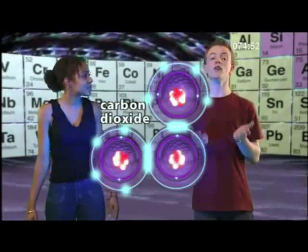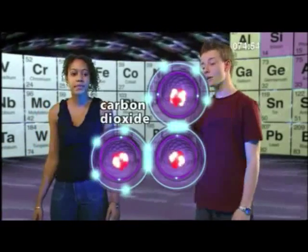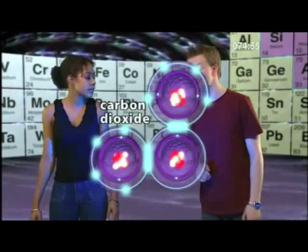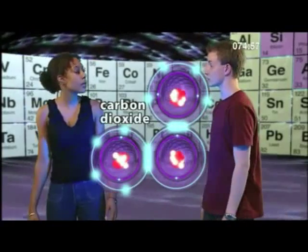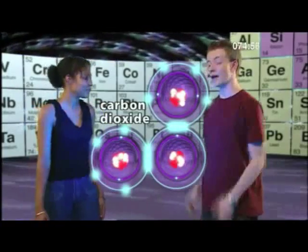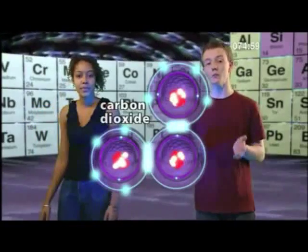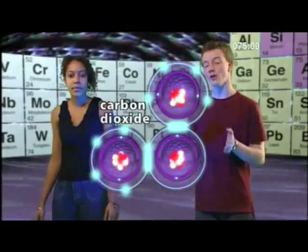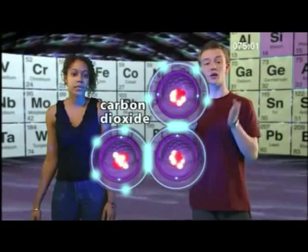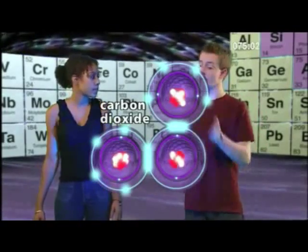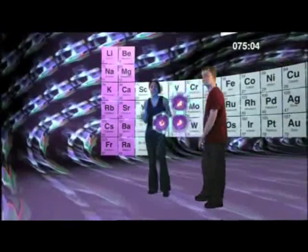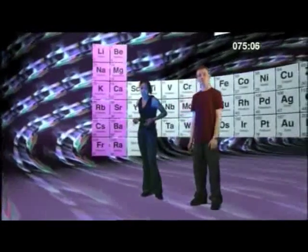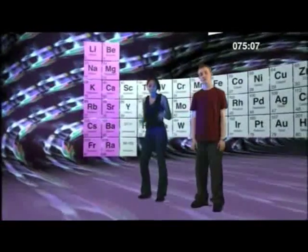In covalent compounds, the atoms fill up their outer electron shells by sharing some of their electrons. This covalent bonding can only occur between a non-metal and a non-metal, whereas metals react with non-metals to form ionic compounds.